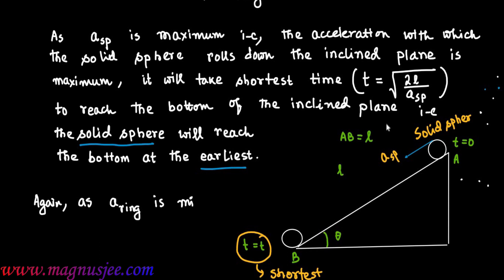Since A_ring is the minimum linear acceleration among the three, the ring will reach the bottom of the incline plane latest.